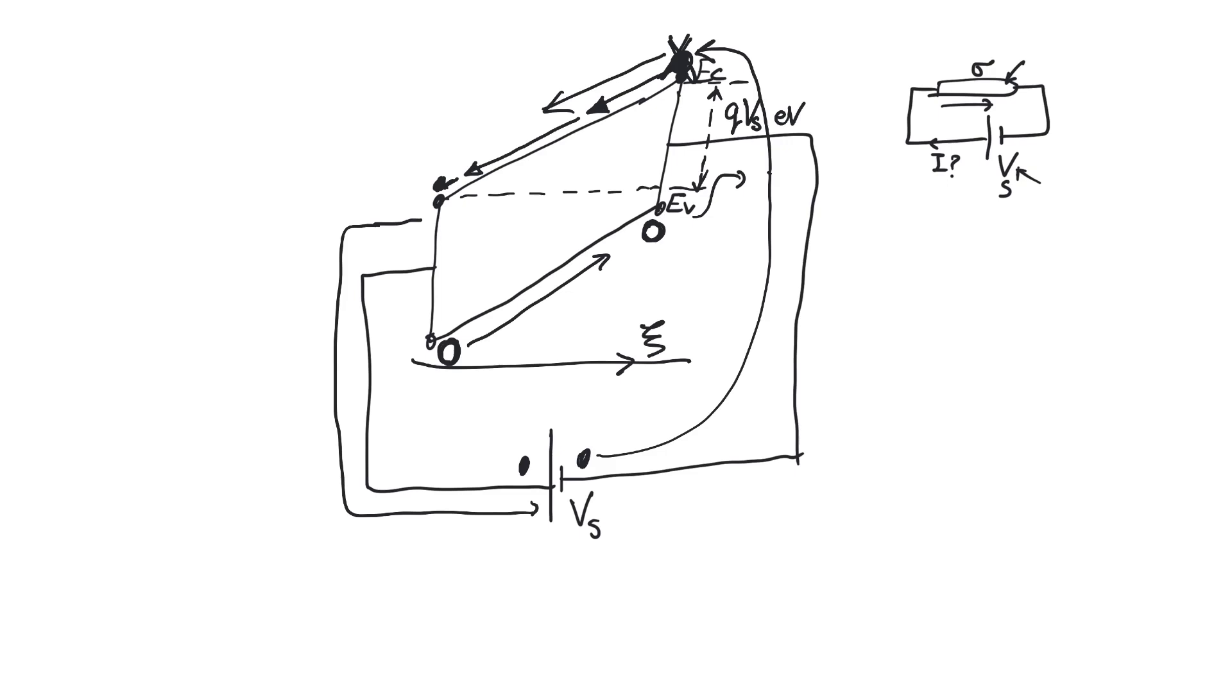So for electrons, we always assume that they want to go down in energy. They want to rest at the lowest energy level possible, which is why electrons float down the slope. So holes, on the other hand, prefer to go up. We can think of holes as bubbles and they prefer to bubble up in the valence band, which is why it's very easy for them to bubble up this way.